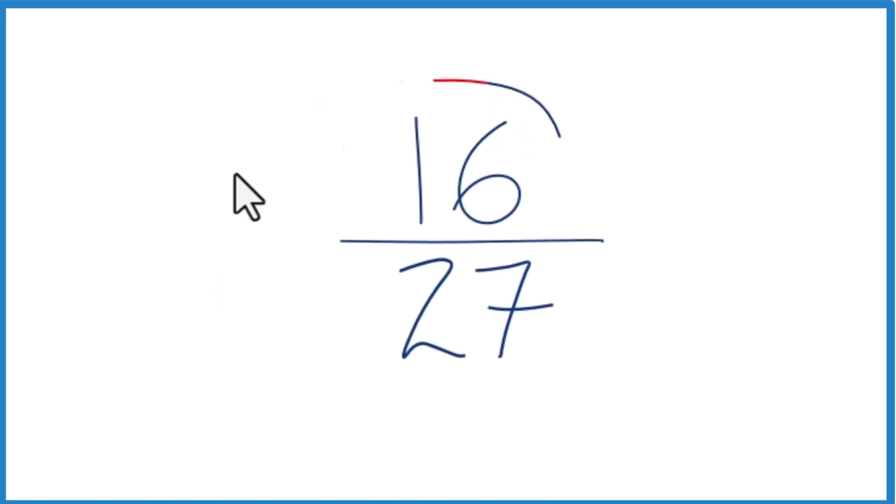Let's simplify the fraction 16/27. Here's how we do this. What we're trying to do is find another fraction that's equivalent, equal to 16 divided by 27, just simplified or reduced down to lowest terms.